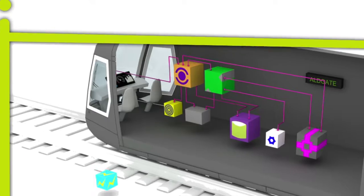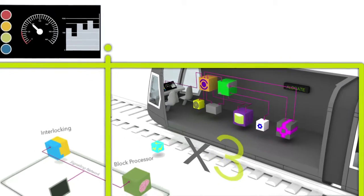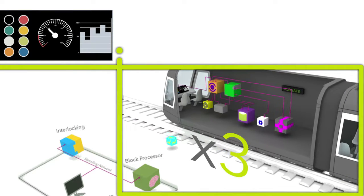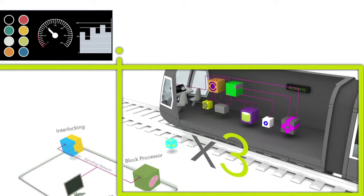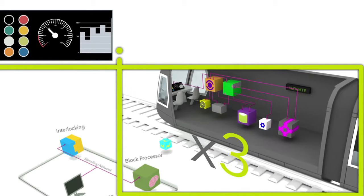For this reason the equipment employed in the ATP system is triplicated. The three systems continually check each other to ensure that safety levels are maintained. Other equipment in the ATO, for example the sensors, are generally duplicated for availability also.